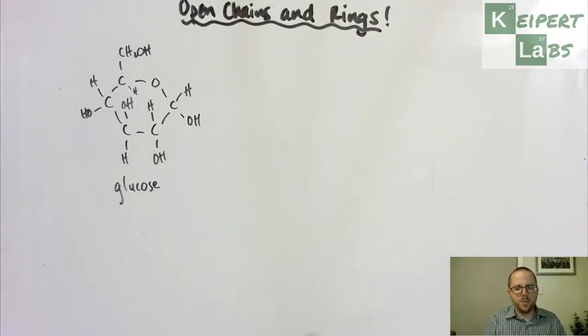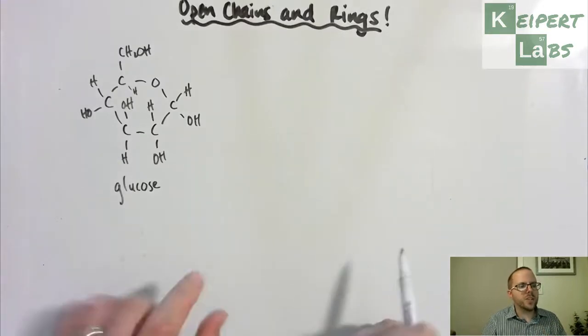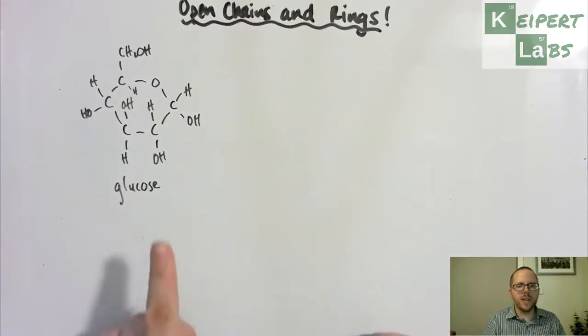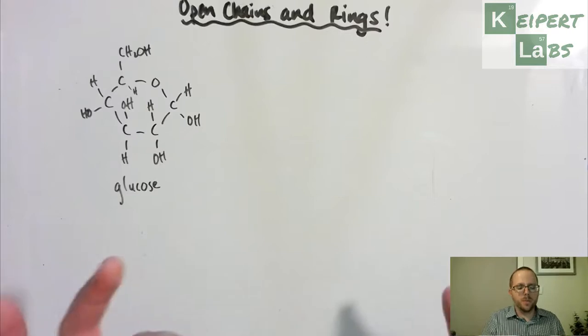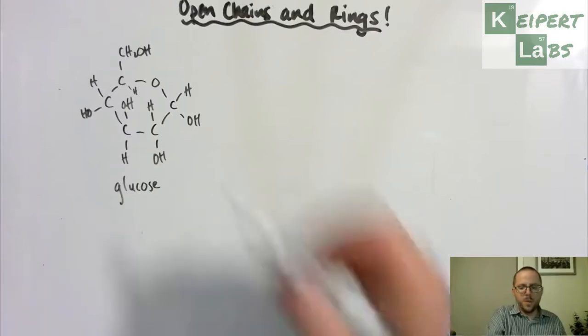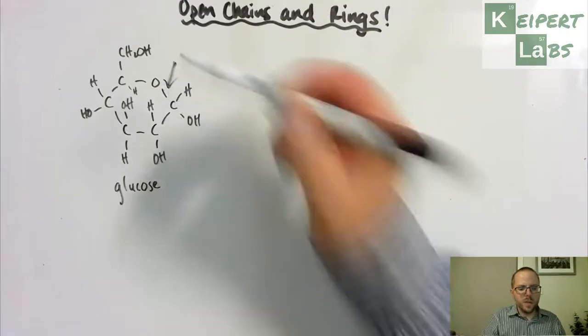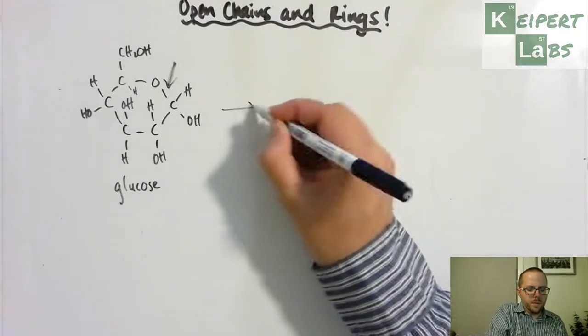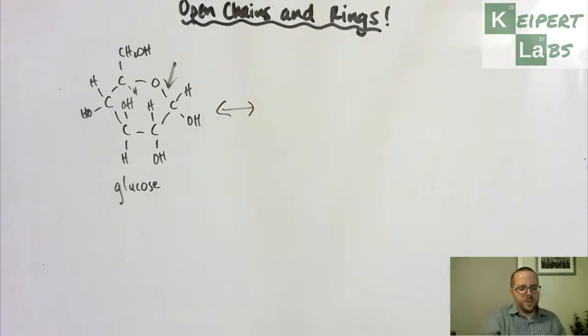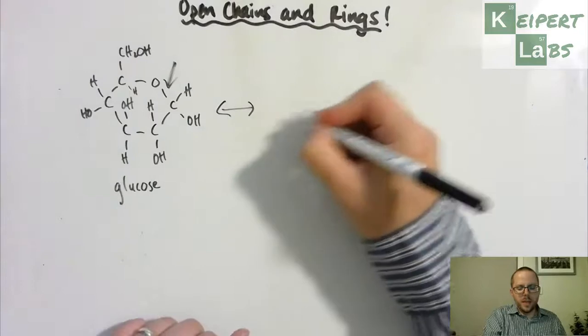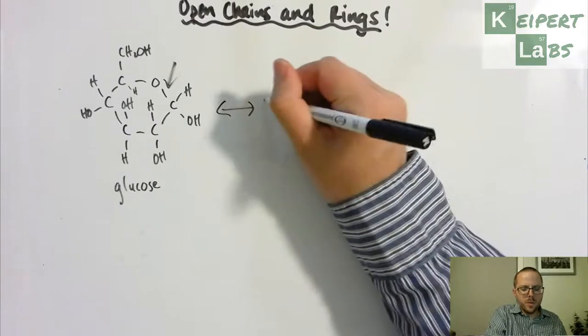Glucose exhibits this strange behaviour where this ring doesn't actually have to stay locked closed. It's actually able to, unlike other ring structures in organic chemistry, open. And so what it does is it opens around about here. And so what we end up with - glucose, which this is one version of it, actually ends up being in equilibrium with this version.